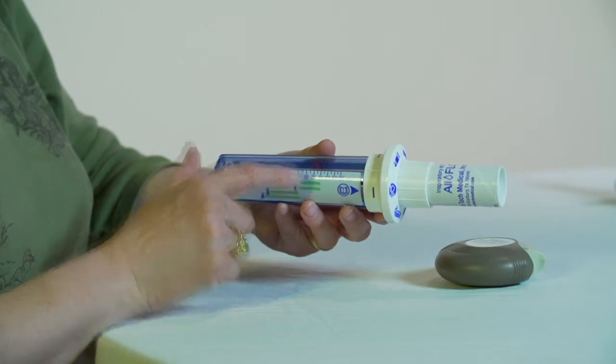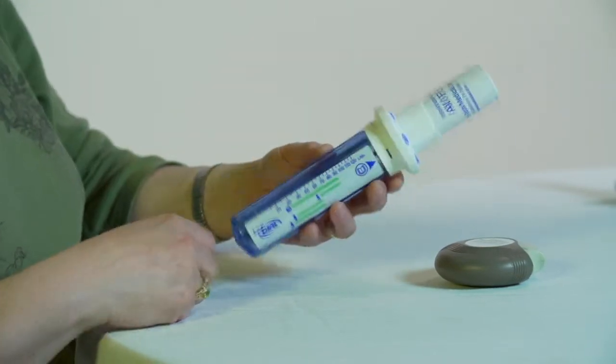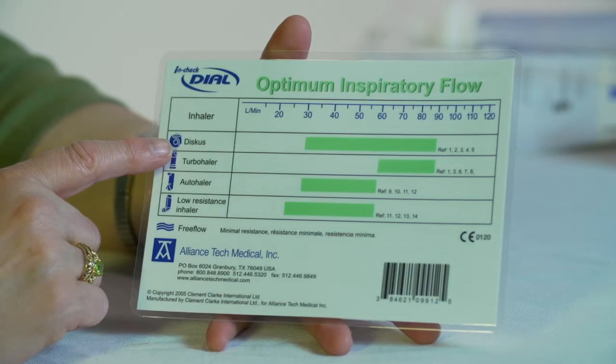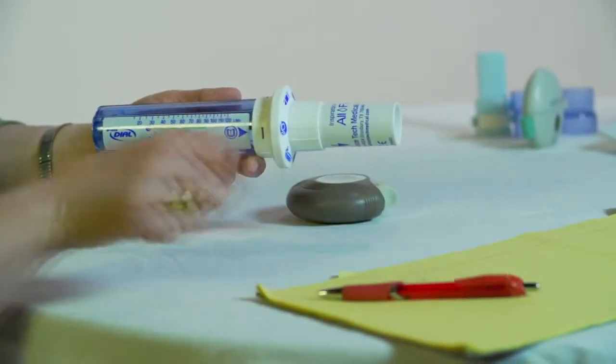The range for the different devices is conveniently along the side of the tube, or you can check the card that comes with the device. Record that rate. Repeat all of the steps twice more to ensure that these results can be duplicated.